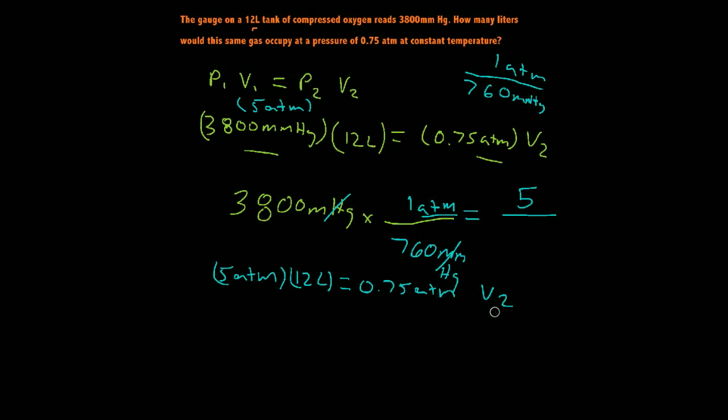volume 2. Well, we want to solve for volume 2, so we're just going to do some algebra here. And I'm going to divide both sides, because I'm multiplying on this side of the equation, I'm going to divide both sides by 0.75 ATM.